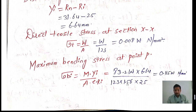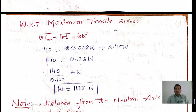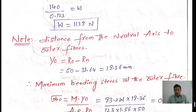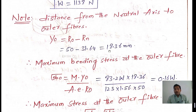The maximum tensile stress equals direct stress plus bending stress at the inside fiber: σt = 0.008W + 0.115W = 0.123W. Setting σt = 140 N/mm² and dividing: W = 140 / 0.123 = 1138 N.